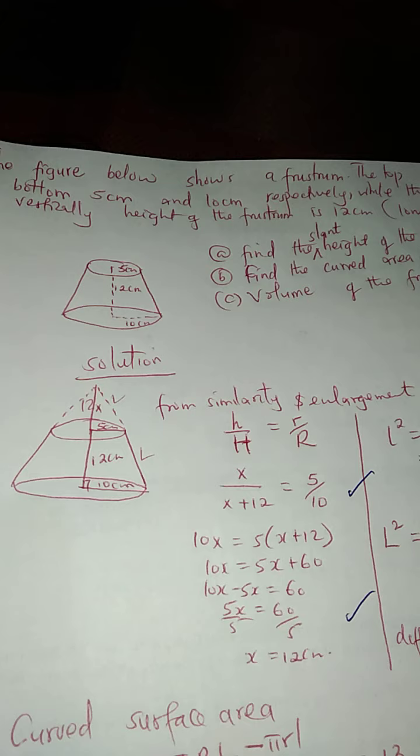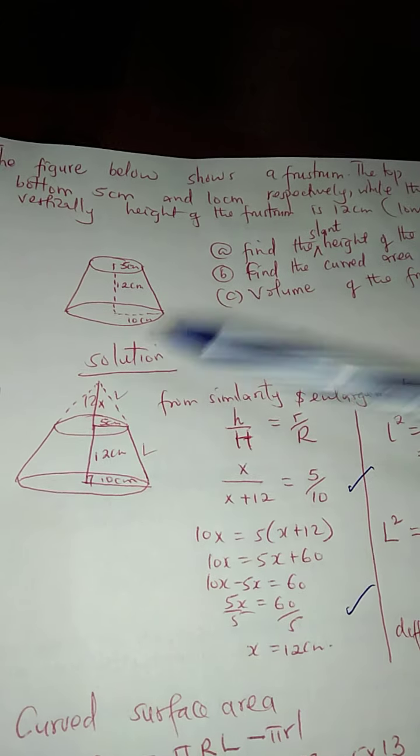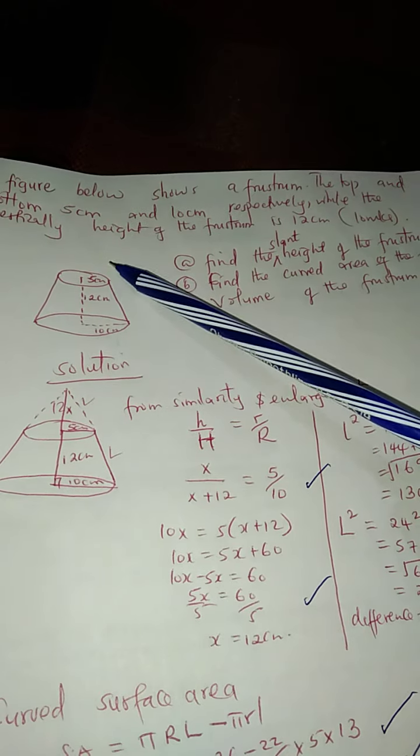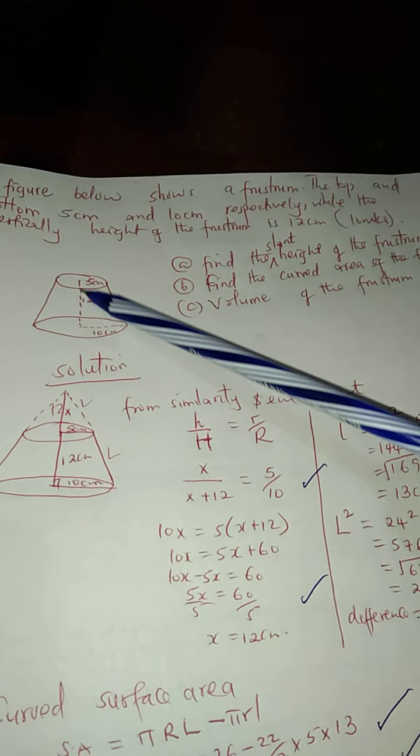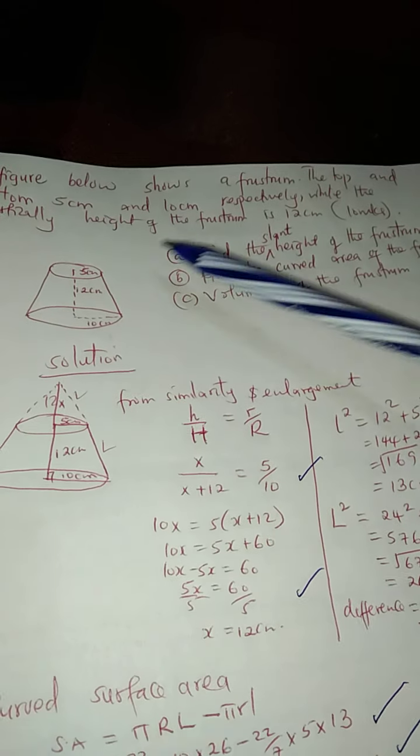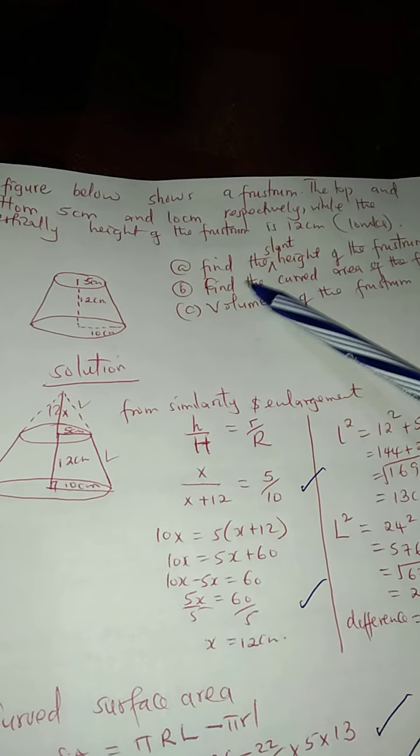There is a portion here that has been removed. So we want to get the slant height. Slant height is this one here. This is called vertical height. This is slant, because it is slanting. Your English matters when it comes to maths.